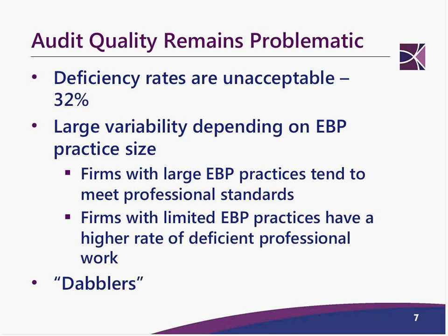The deficiency rate is unacceptable at 32%. You might wonder why you should care, but if an audit is determined to be deficient, it will coincide with the filing of the 5500, and that 5500 is then considered delinquent. So it's important to communicate with your auditor about what their practice involves.